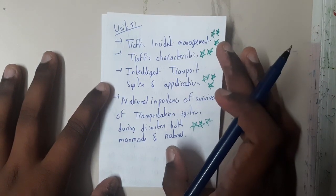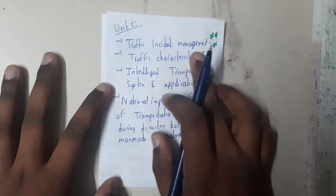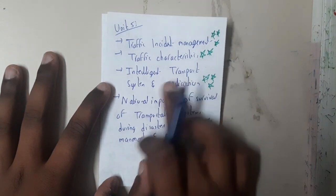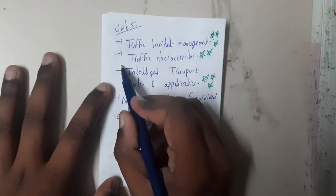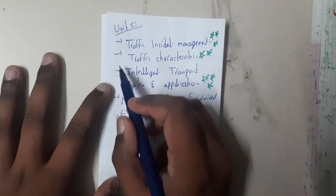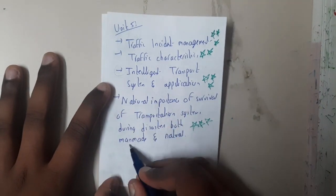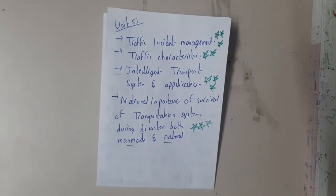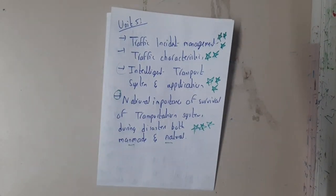There are only five different topics. Firstly, you need to be perfect with traffic incident management and intelligent transport systems and its applications — I am 100% sure there could be a question on this. Similarly, national importance and surveys based on man-made and natural impacts on transportation are important topics.